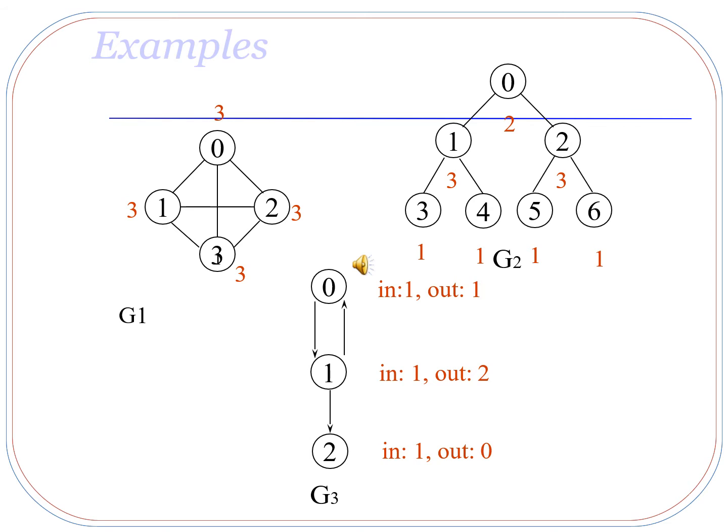Here we are given three examples of graphs. Let's calculate the degree of each graph. In graph G1, there are four nodes and each node is connected to the others by three edges. So the degree of each vertex is 3. For example, node 0 is connected with 1, 2, and 3, one edge each, so the degree of node 0 is 3. Similarly, the degree of nodes 1, 2, and 3 are also 3. In graph G2, the degree of node 0 is 2 because there are two edges incident on it.